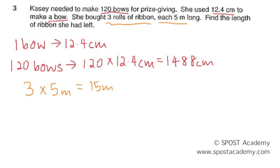But the bows that Casey made are actually in terms of cm, so I need to change the meters into cm. So this is equivalent to 1500 cm.